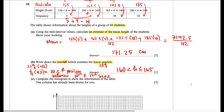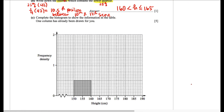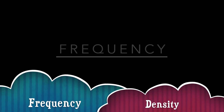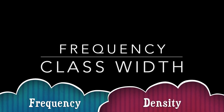Number 10 letter C: complete the histogram below to show the information in the table — one column has already been drawn for you. Looking closely at the vertical axis of the graph provided, it is labeled frequency density. Hence, we must compute the frequency density first. Frequency density is equal to the class frequency divided by the class width.